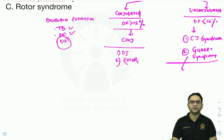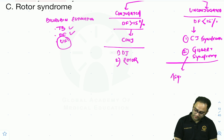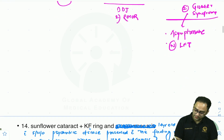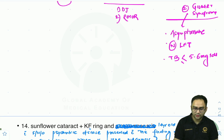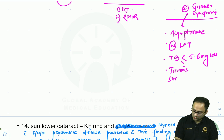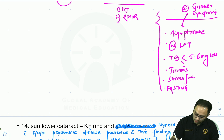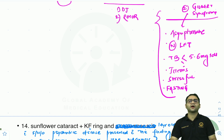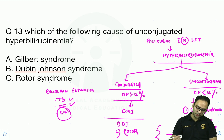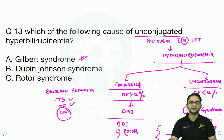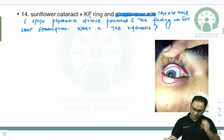Gilbert syndrome is an important cause of unconjugated hyperbilirubinemia that is often missed because patients are asymptomatic with normal LFTs. Total bilirubin rarely crosses 5–6, and jaundice is precipitated by stressful conditions and fasting. These patients mostly remain undiagnosed. The answer to this question on unconjugated hyperbilirubinemia is Gilbert syndrome.